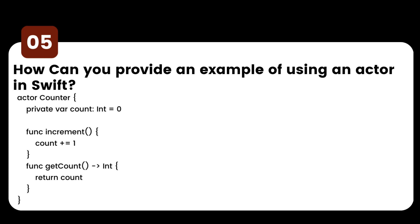The getCount method simply returns the current value of the count variable. Access to the count variable is synchronized by the actor. Overall, this code provides a safe way to manage a counter that can be accessed and modified concurrently by multiple actors or tasks.